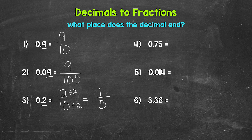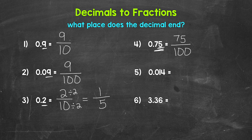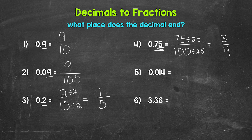So two-tenths as a decimal equals two over 10 as a fraction, and we were able to simplify that to one-fifth. Let's move on to number four, where we have 0.75 — 75-hundredths. Here we have 75 to the right of the decimal, and this decimal ends in the hundredths place. So 75 is our numerator and 100 is our denominator — 75 over 100. We can simplify: we have a greatest common factor of 25. 75 divided by 25 gives us three, and 100 divided by 25 gives us four. So we get three over four — three-fourths. The only common factor between three and four is one, so this is in simplest form.